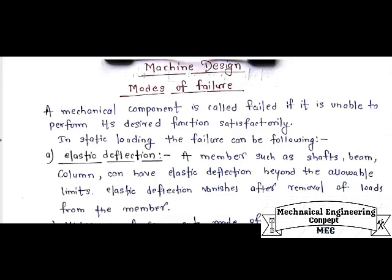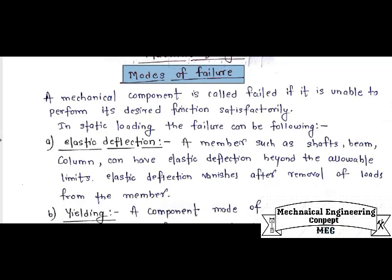Hello, welcome to my channel on mechanical engineering concepts. Today I am going to discuss the basics of machine design, specifically the different types of modes of failure which occur in machine design elements. The basic difference between strength of materials and machine design is that in strength of materials we consider that a plane section will remain plane before and after failure, but in machine design we do not consider that assumption.